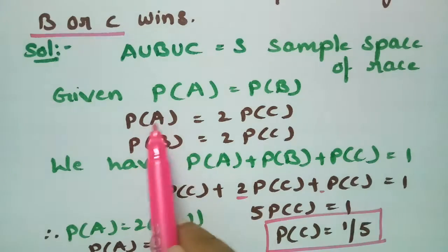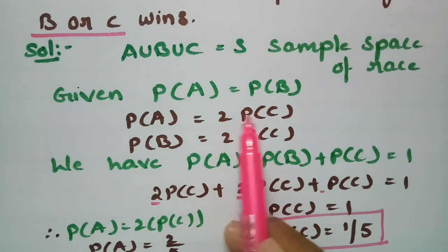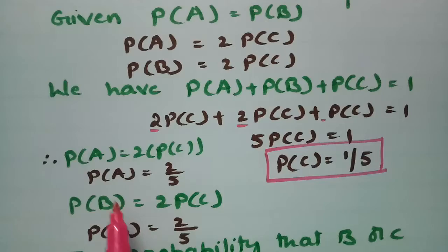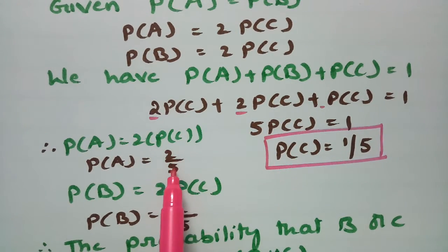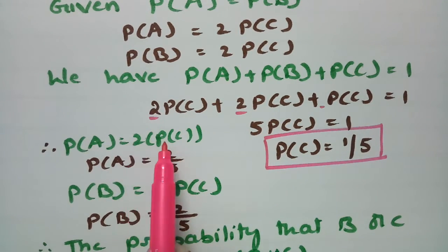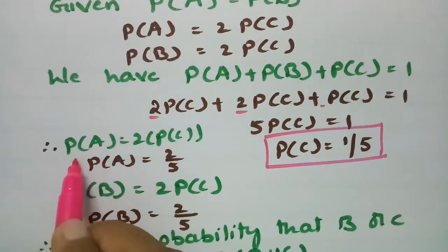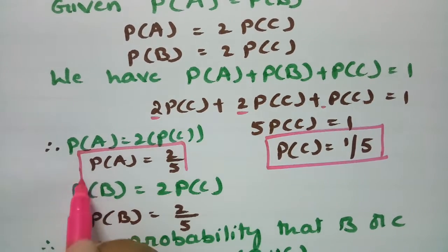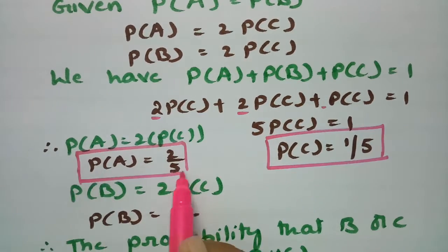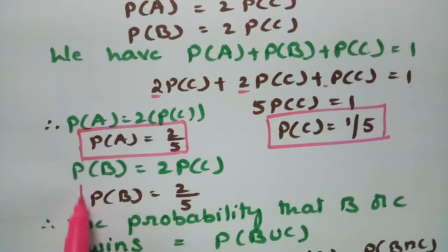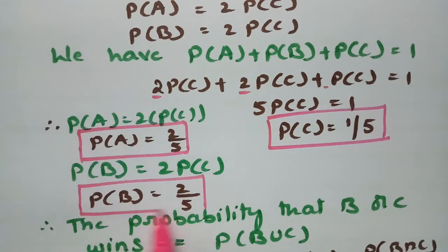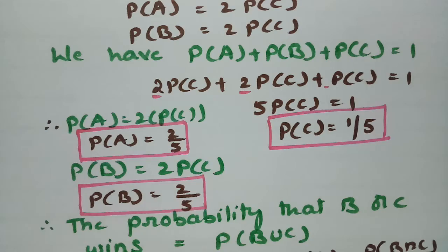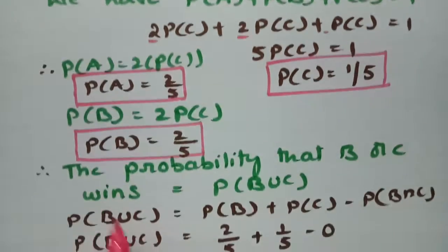Now, P(A) equals 2 times P(C). Substituting P(C) as 1 by 5, this gives 2 times 1 by 5, which equals 2 by 5. Therefore the probability of A winning the race is 2 by 5, and the probability of B winning the race is also 2 by 5.